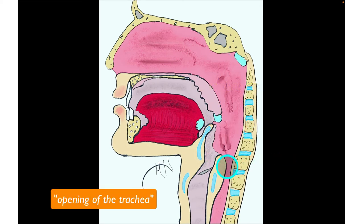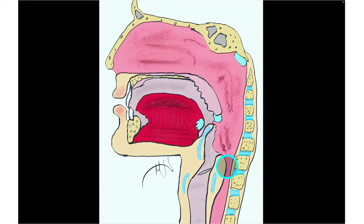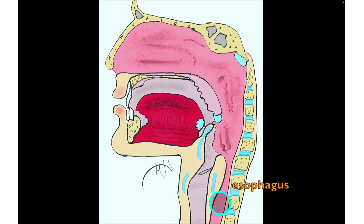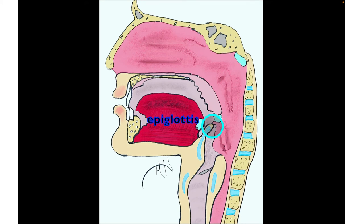There are two avenues that air or food will travel down within the neck. Food and drink pass through the oral cavity and move down into the esophagus, leading to the stomach. Air goes down through the larynx into the trachea. The larynx proceeds from the epiglottis down to the cricoid cartilage, and inferior to that is the trachea. The opening to the trachea is known as the glottis.